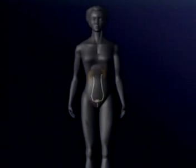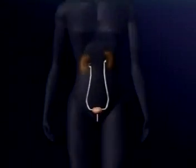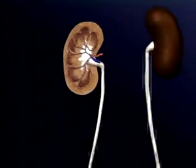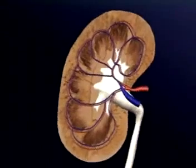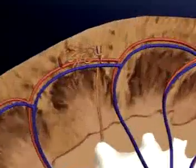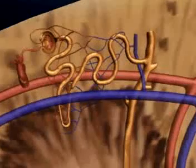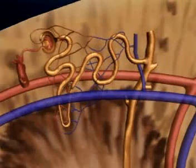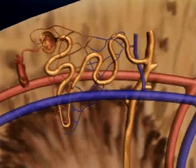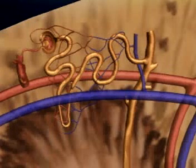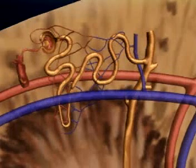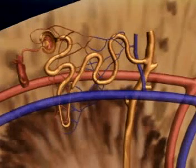The mammalian kidney helps regulate water balance and removes wastes from the blood. The functional unit of the kidney is the nephron, which consists of the glomerular capsule and a long-twisted tubule. Each human kidney contains about one million nephrons.